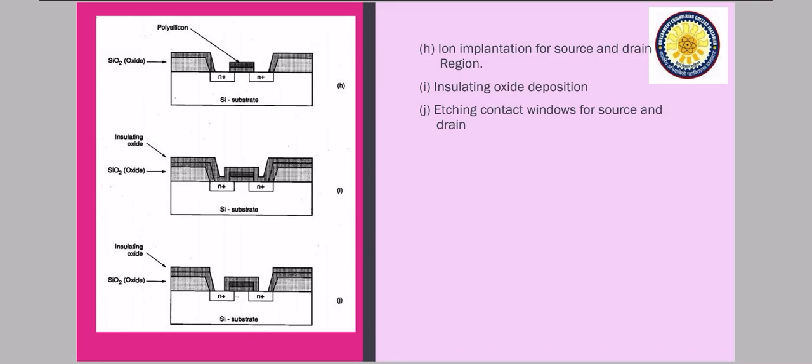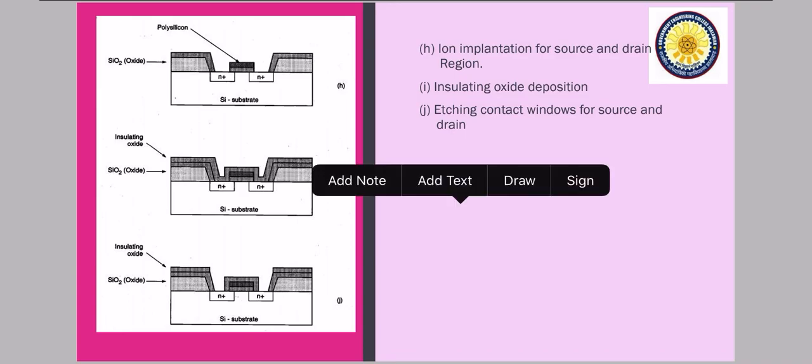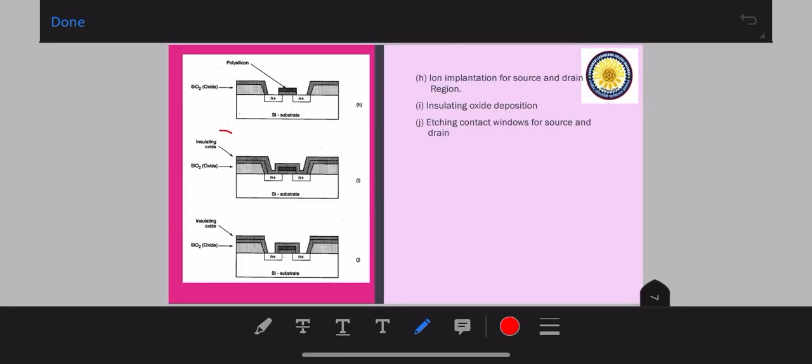So once the source and drain regions are completed, the entire surface is then covered with an insulating layer of your silicon dioxide. Then again it is patterned. So the insulating layer is then patterned in order to provide contact windows for your source and drain regions.